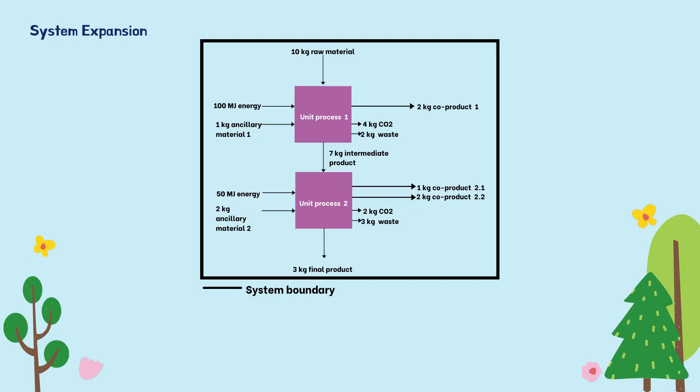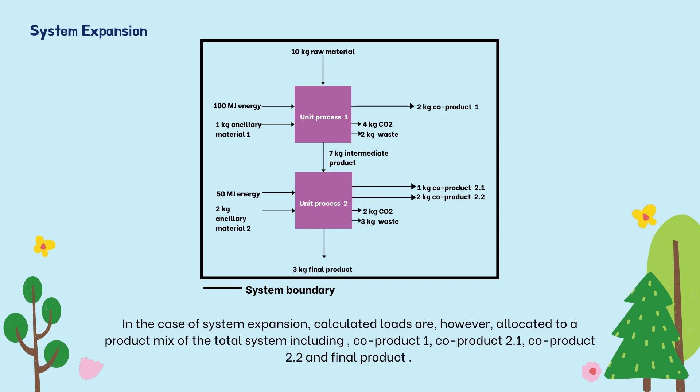In contrast, with system expansion the co-products remain in the system. In this case, calculated loads are allocated to a product mix of the total system, including co-product 1, co-product 2.1, co-product 2.2, and the final product. With this method, very large systems may be studied, which can make sense for an overall representation of the environmental loads of large industrial systems.